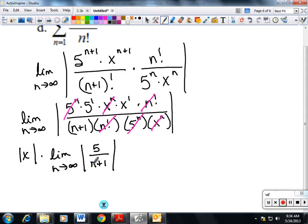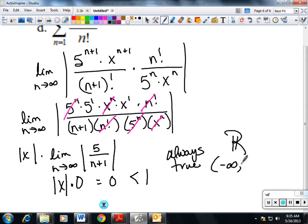Well the limit of that, the degree of the bottom is bigger than the top, that goes to 0. So I've got 0 times the absolute value of x, which is 0. I force that less than 1, and when is this true? This is always true. So if it's always true, then it's all real numbers, or you'll see it written negative infinity to infinity. Because 0 is always less than 1, so it's always true.